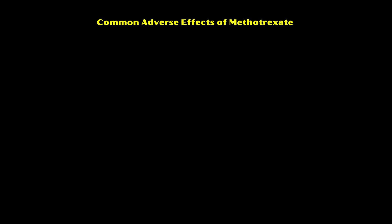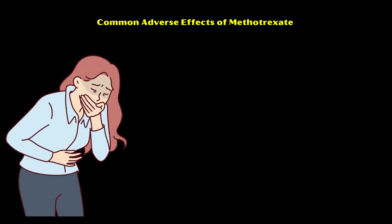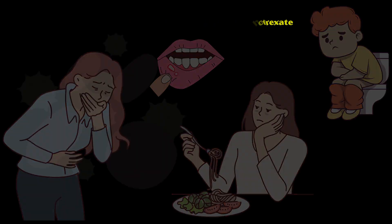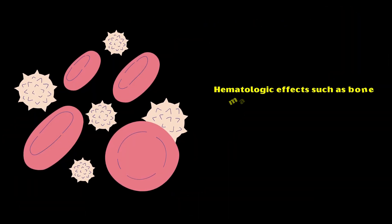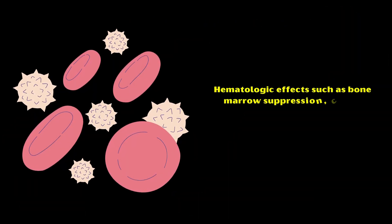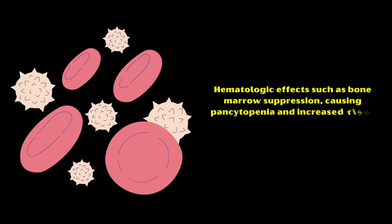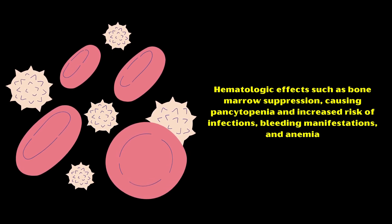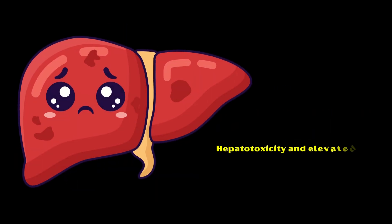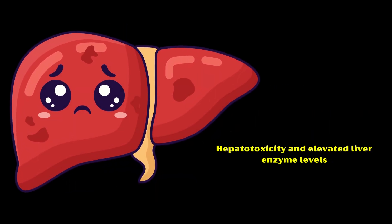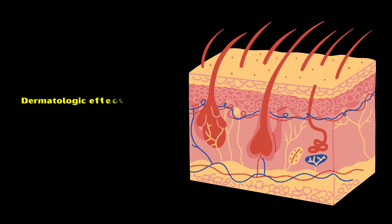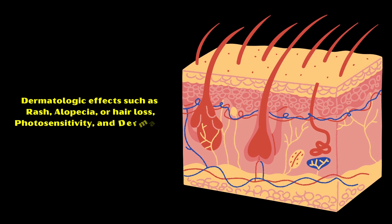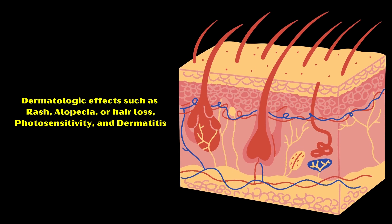Common adverse effects of methotrexate include gastrointestinal side effects such as nausea and vomiting, diarrhea, mouth ulcers, and loss of appetite. Hematologic effects include bone marrow suppression causing pancytopenia, increased risk of infections, bleeding manifestations, and anemia. Hepatotoxicity and elevated liver enzyme levels may also occur. Dermatologic effects include rash, alopecia or hair loss, photosensitivity, and dermatitis.